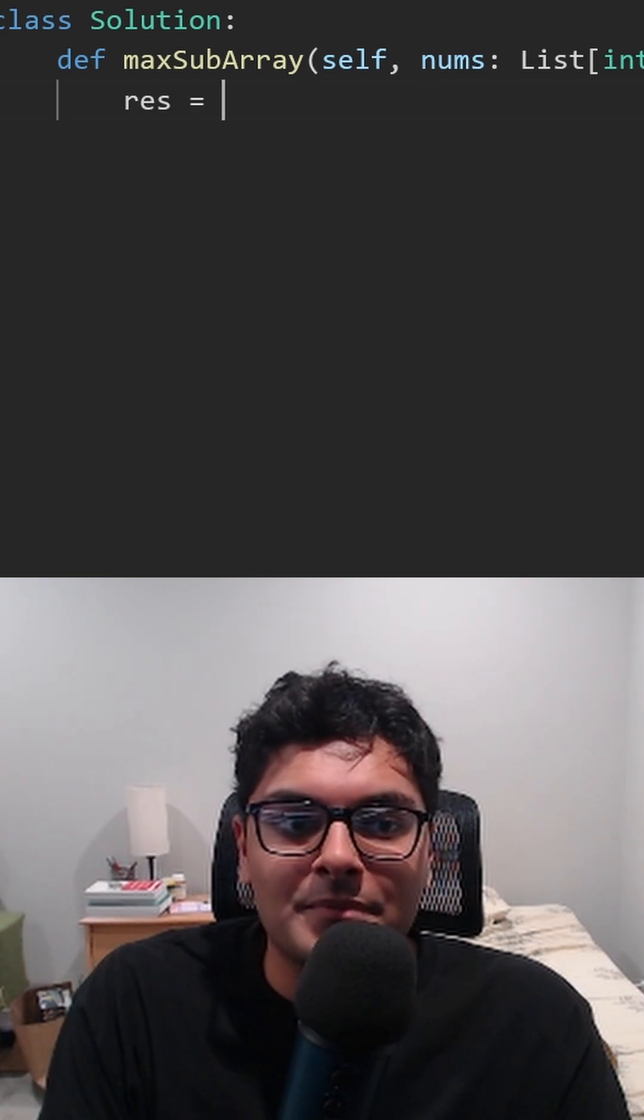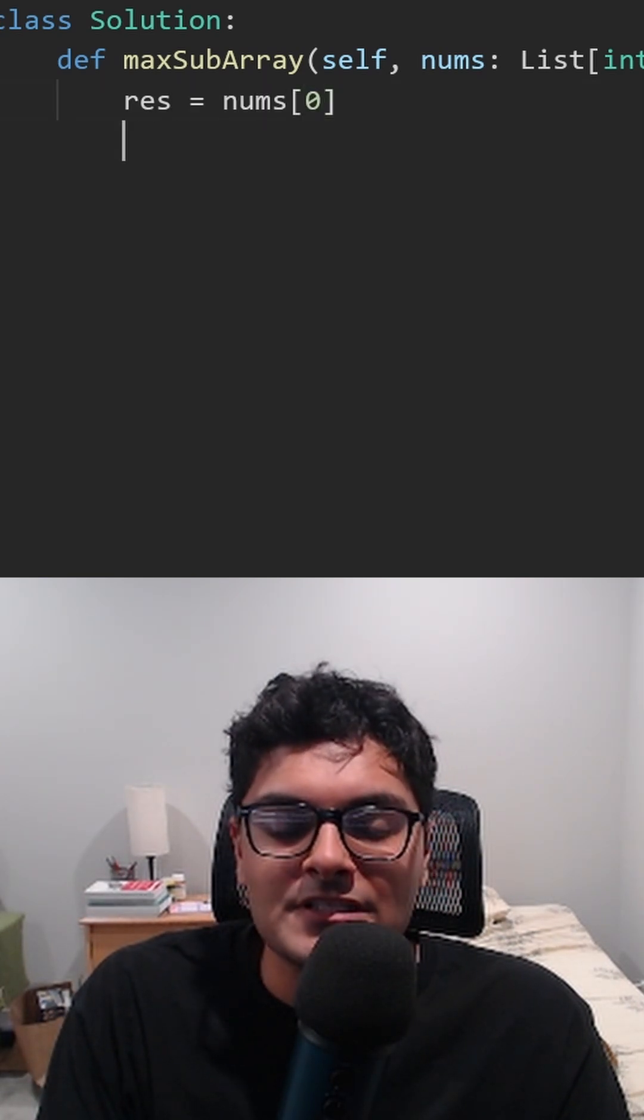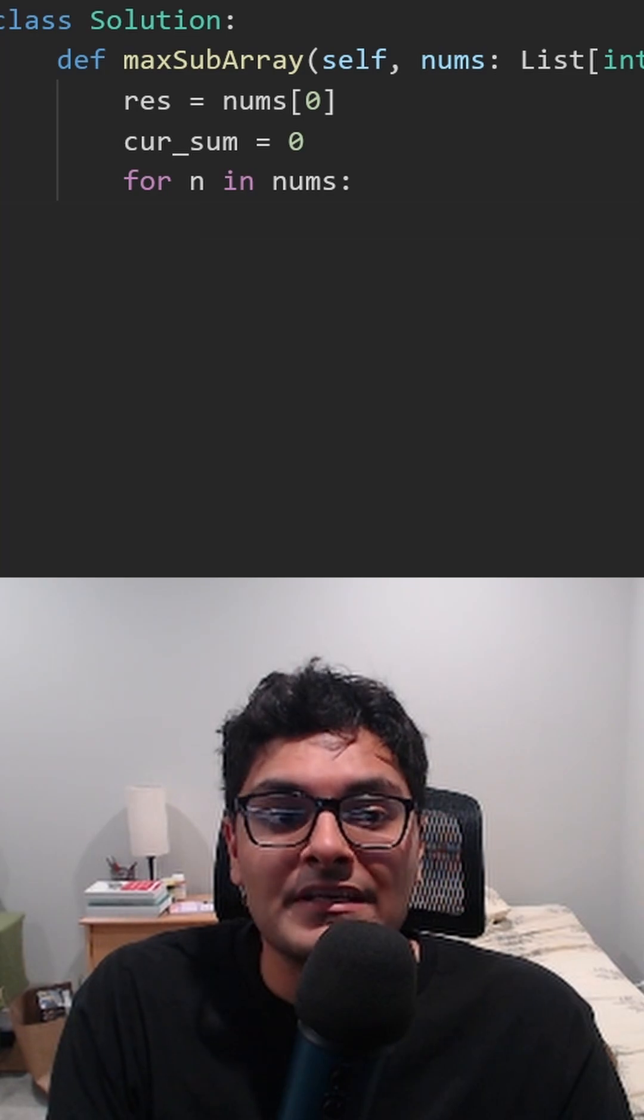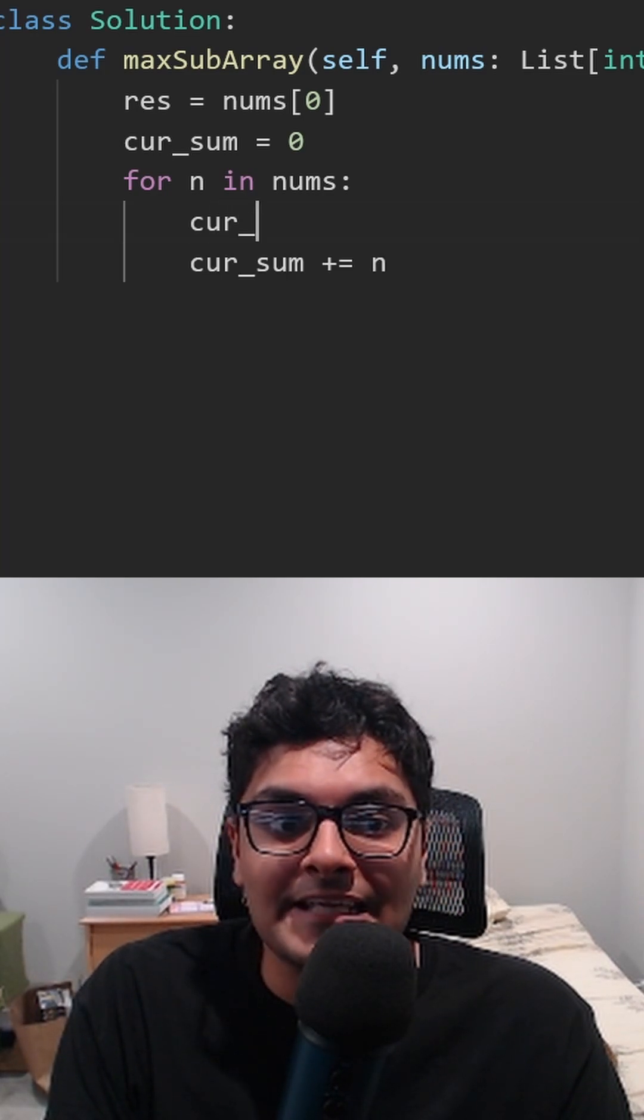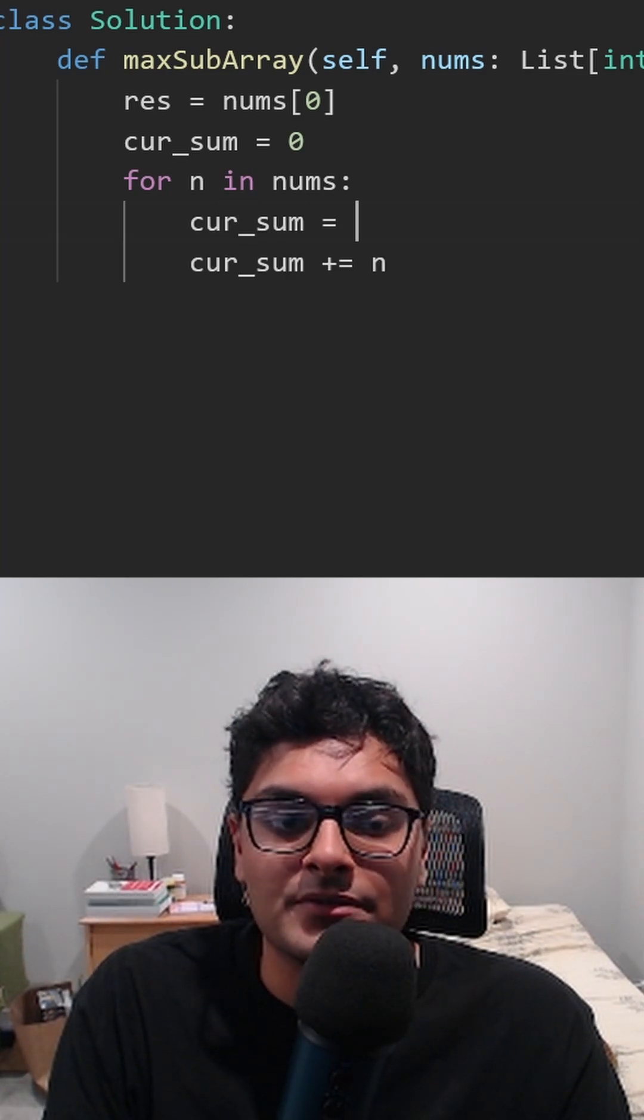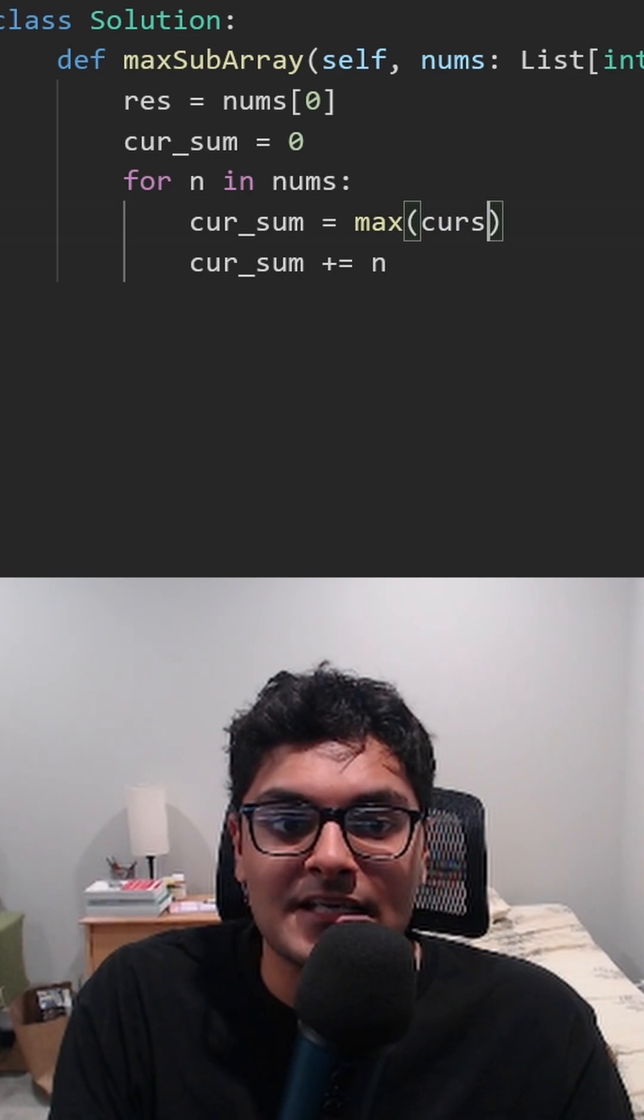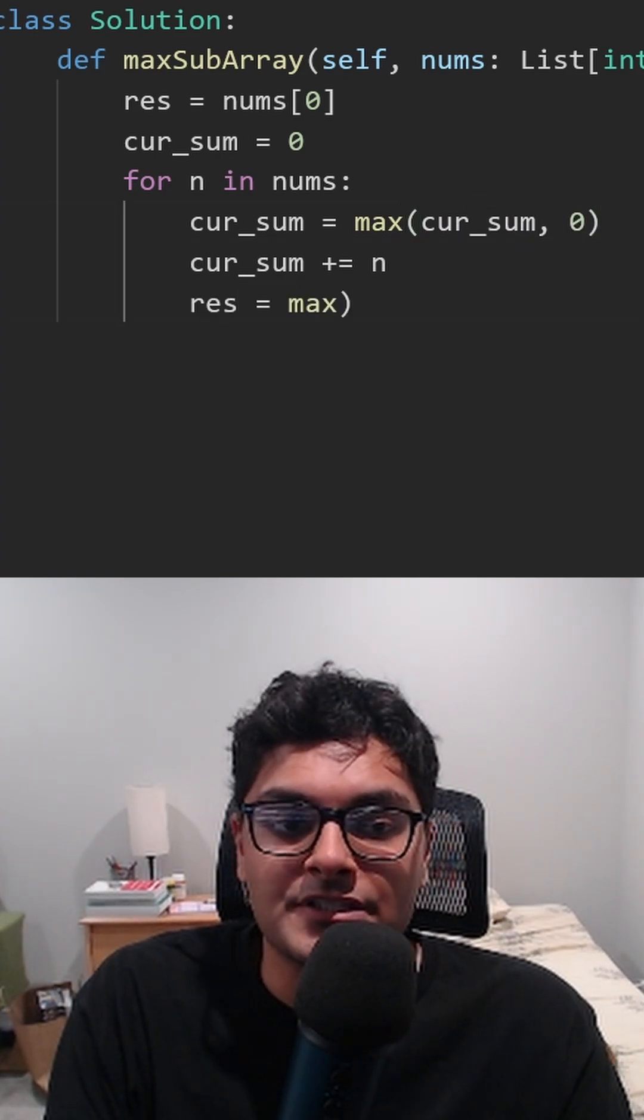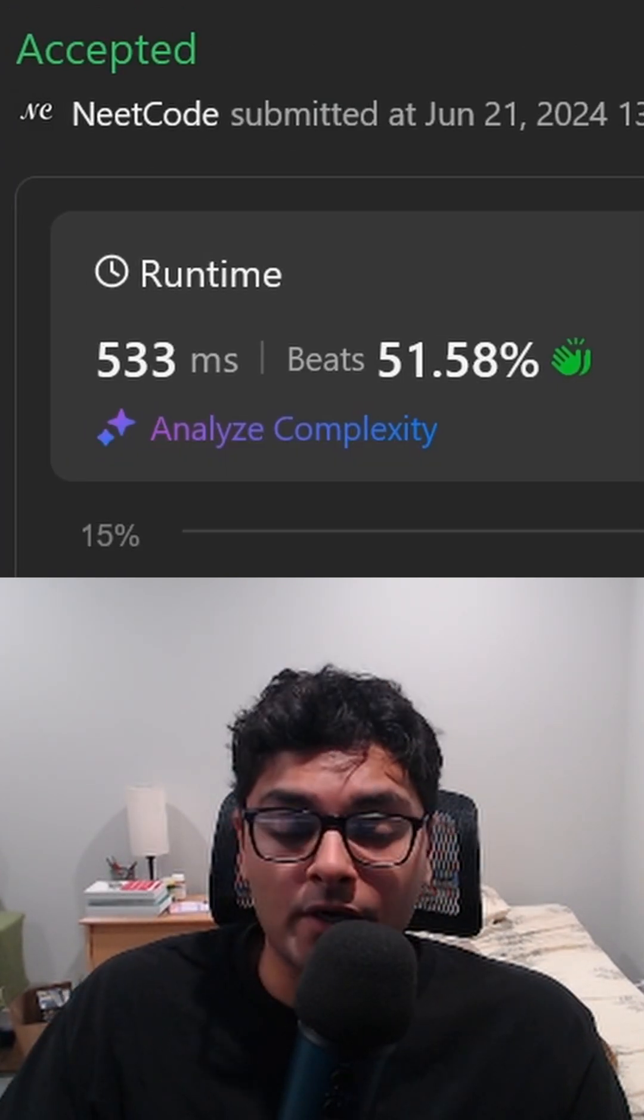Coding it up is easier than you might think. Start the result at the first element. Start the current sum at zero. Go through every number. If the current sum is negative, we want to reset it to zero. We can do that like this. Take the max of itself and zero. We want to update the result. Just take the max of self and the current sum and it works.